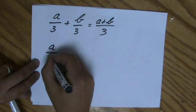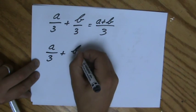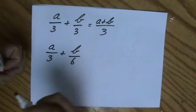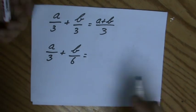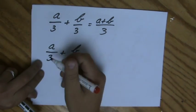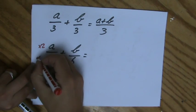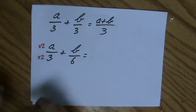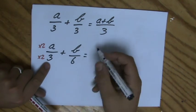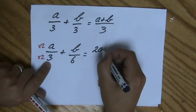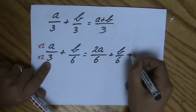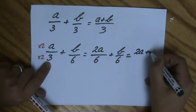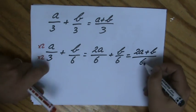But I could also get a over 3 plus b over 6. Can I add these two fractions? Well, I can only add fractions if the denominator is the same. It's not the same, so I have to manipulate the question. I have to find a common multiple, and a common multiple is 6. So 2a over 6 plus b over 6, and that will be 2a plus b over 6.